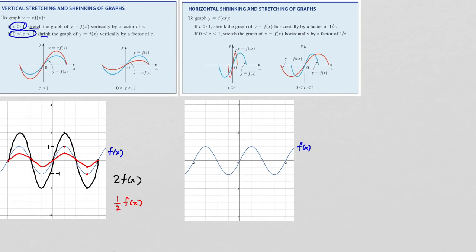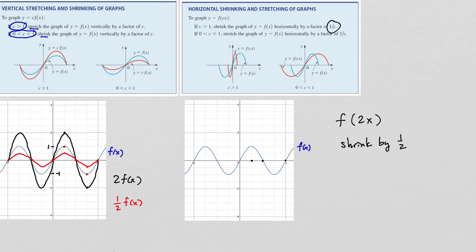For example, if I have this graph f(x) and I want to know what f(2x) looks like, this is going to shrink by a factor of 1/c, which in this case is 1/2. So every point in the x direction is going to shrink by 1/2. Where x is 1, it's now going to shrink down to x = ½. Where x equals 2, it's going to shrink down to x = 1. And so you get this kind of effect on the graph.